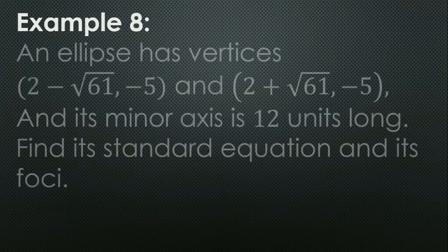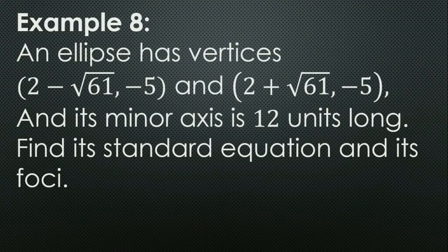Example 8: An ellipse has vertices (2−√61, −5) and (2+√61, −5), and its minor axis is 12 units long. Find its standard equation and foci.